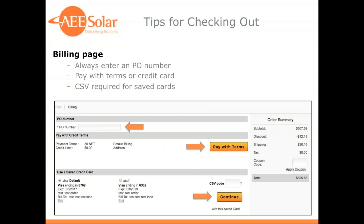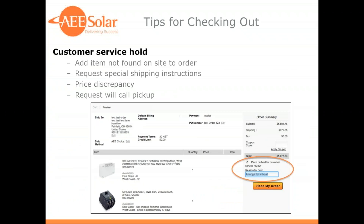Next, you would choose whether you'd like to pay with your credit terms or with a credit card. Finally, you're brought to your order review window, which allows you to make a final review of your order, shipping information, and payment method.